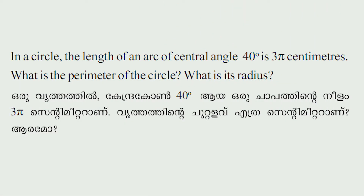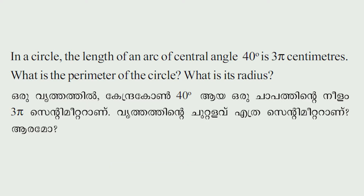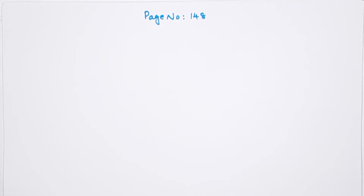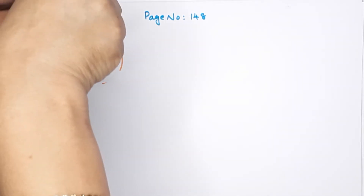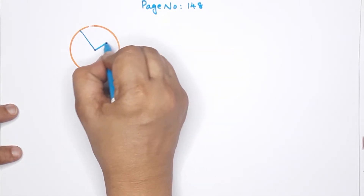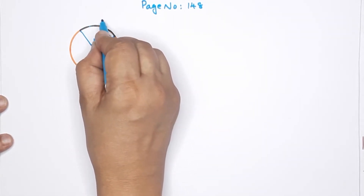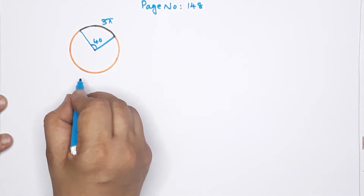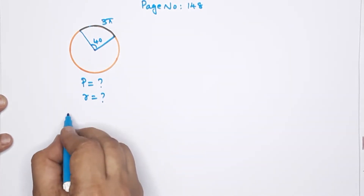The length of an arc of central angle 40 degrees is 3.5 centimeters. What is the perimeter of the circle? What is its radius? Let's see — we have a circle where the central angle is 40 degrees and the arc length is 3.5 centimeters. We need to find the perimeter and the radius.